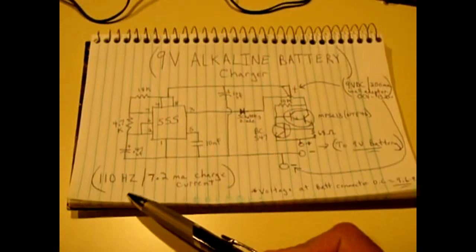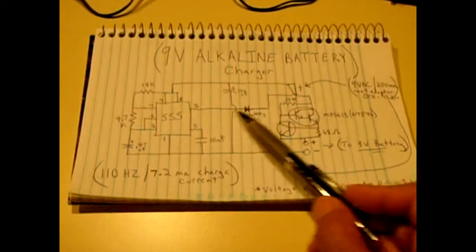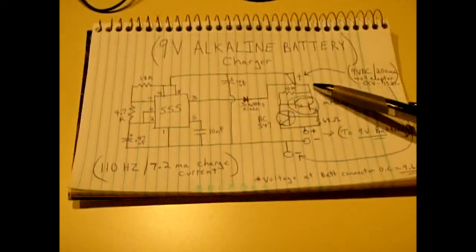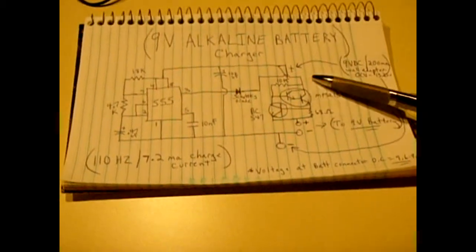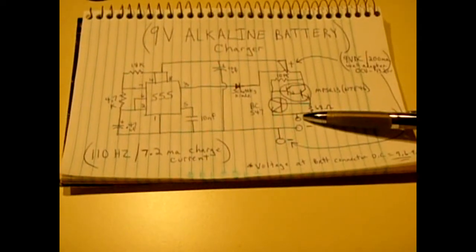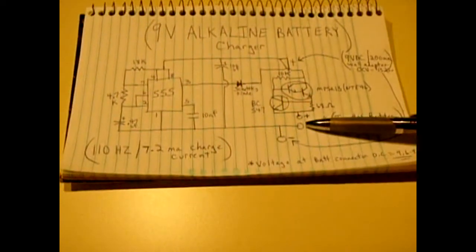Once I put together the 110 Hertz 555 oscillator I fed that through a Schottky diode and that goes into a separate circuit which is a constant current circuit. I made this put out roughly seven to between seven and eight milliamps into the battery.